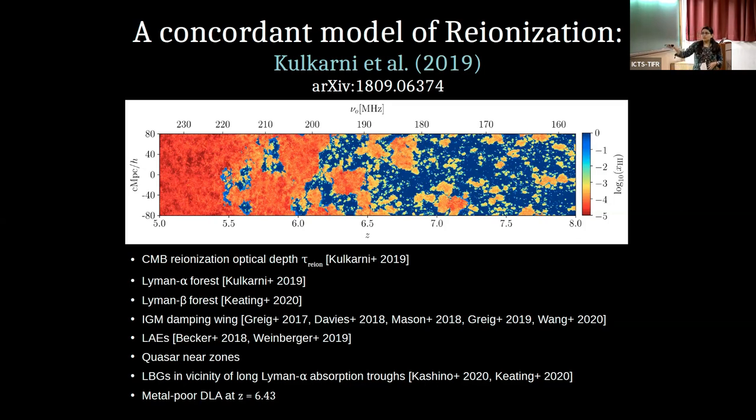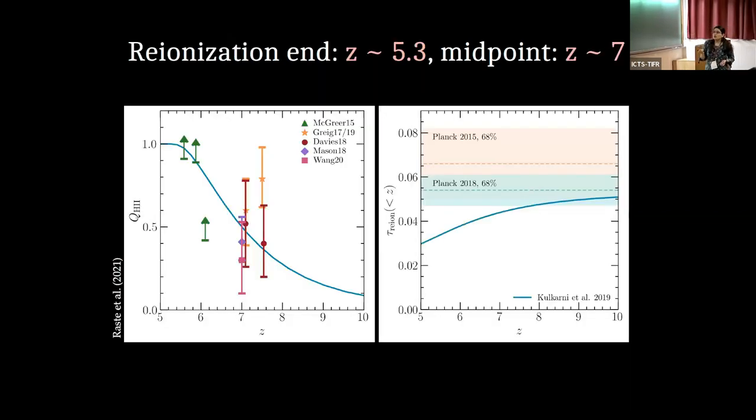So for example, Lyman alpha forest and quasar near zones. So with these observations, we have this kind of reionization history, in which we see that the reionization ends at very low redshift, around redshift 5.3. And it's very patchy also. So this is the reionization history that we get.